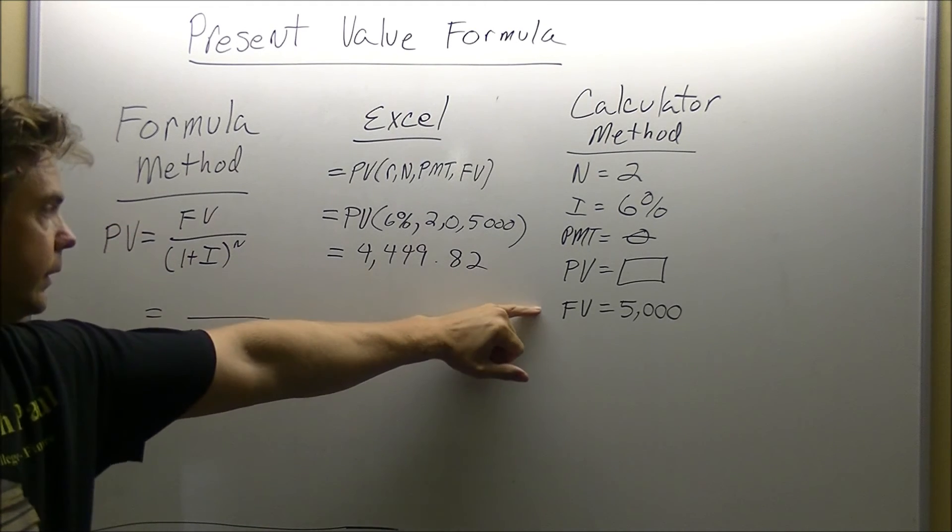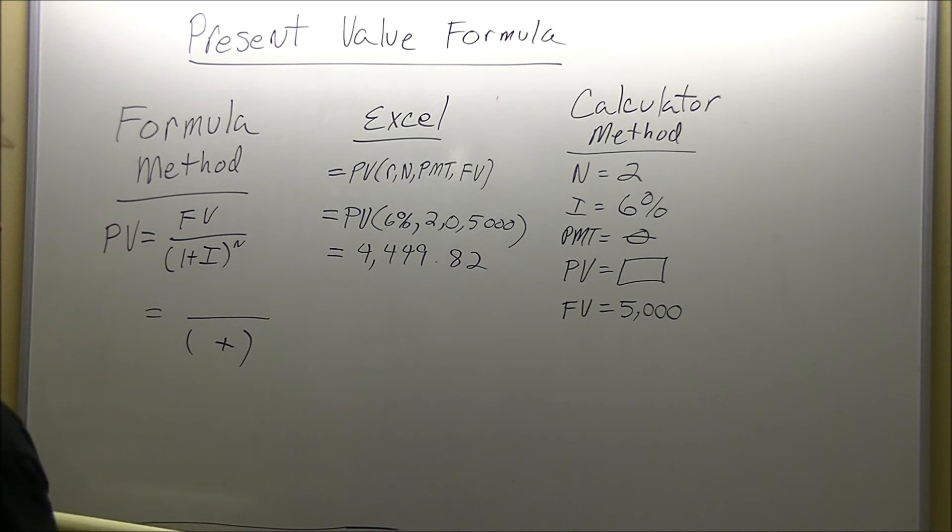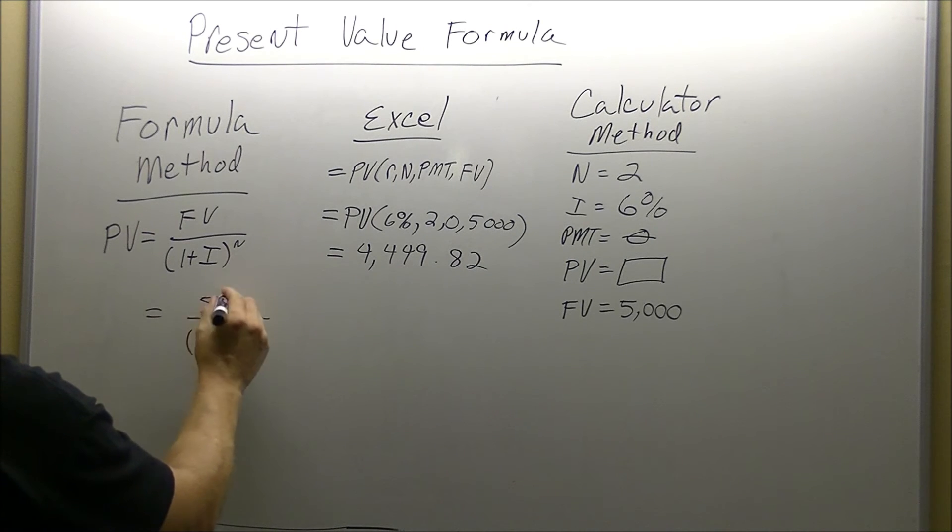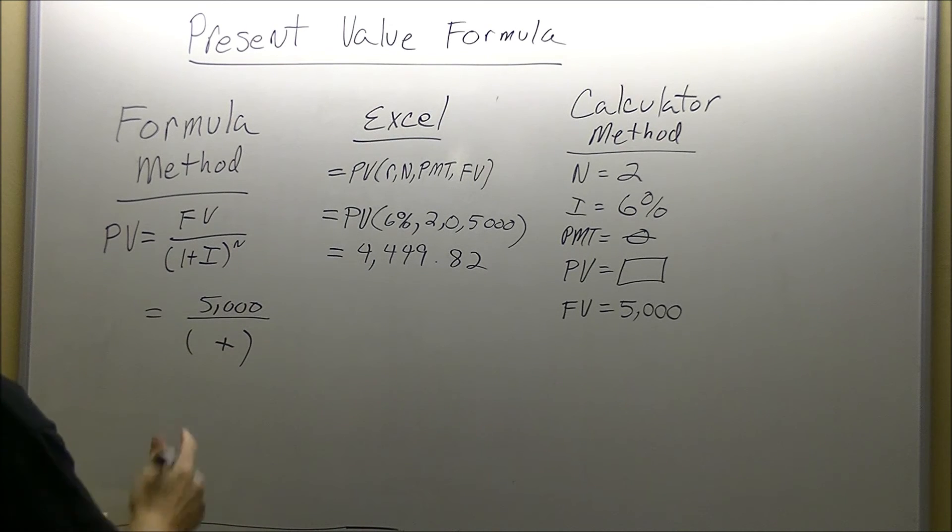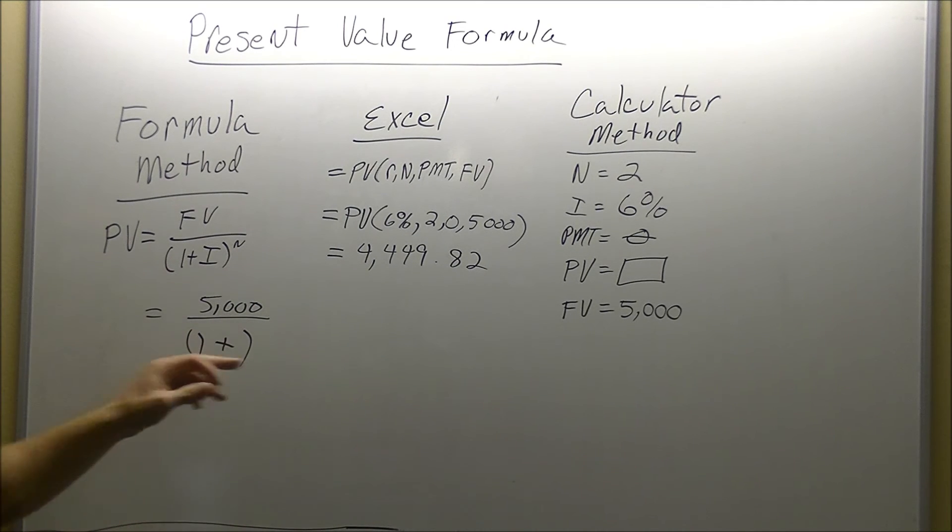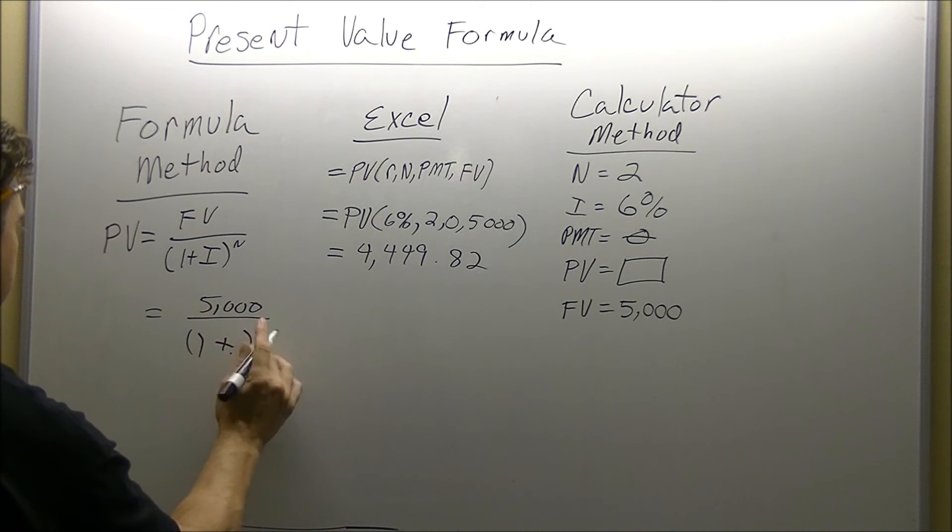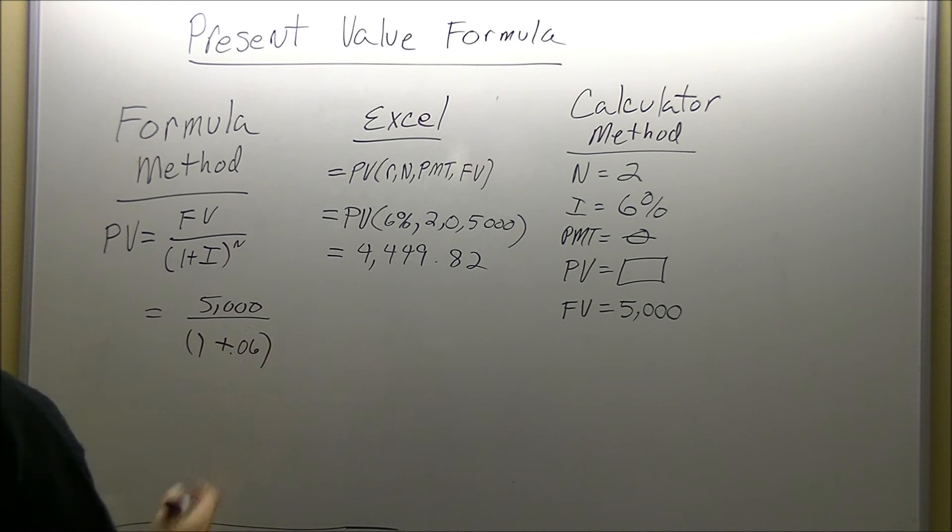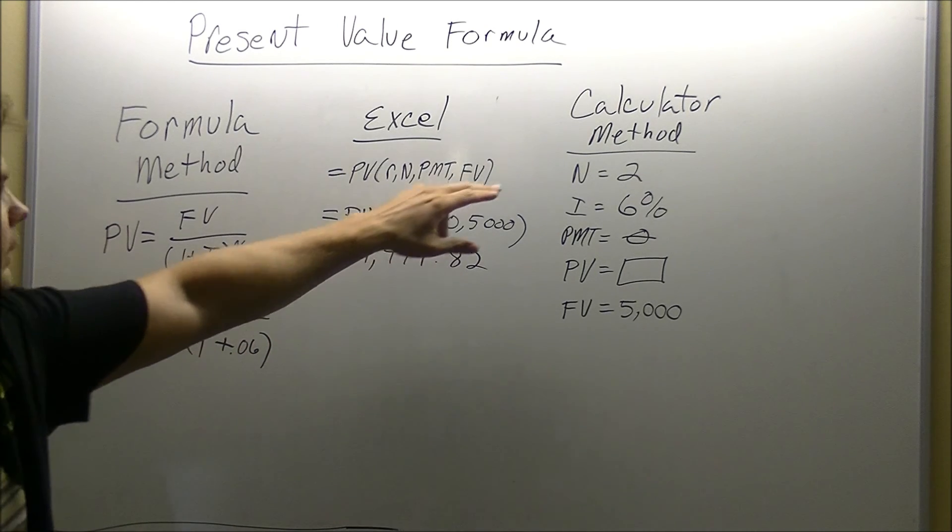Find the future value, we're going to use the calculator method, we're going to pull from there. So we're going to put our $5,000 upstairs, drop the 1, and we're going to find our I, .06, and we're going to raise it to the N, which is the 2.